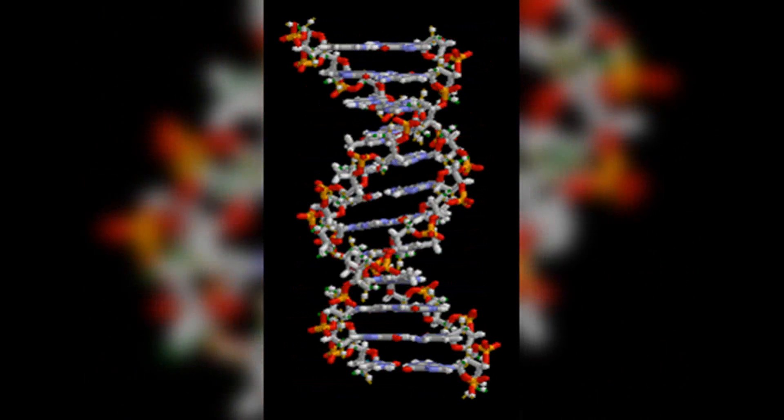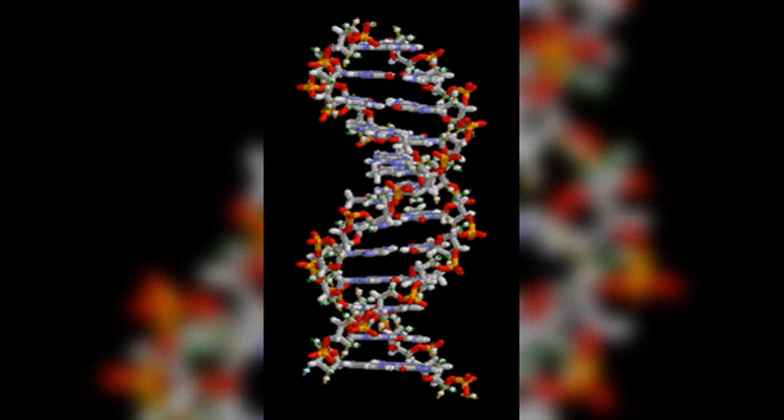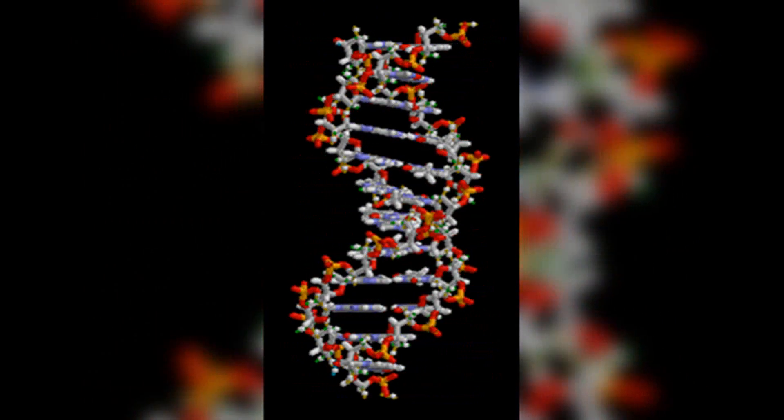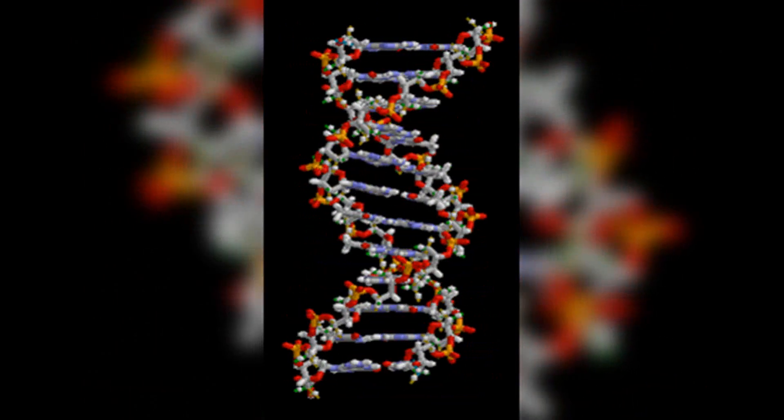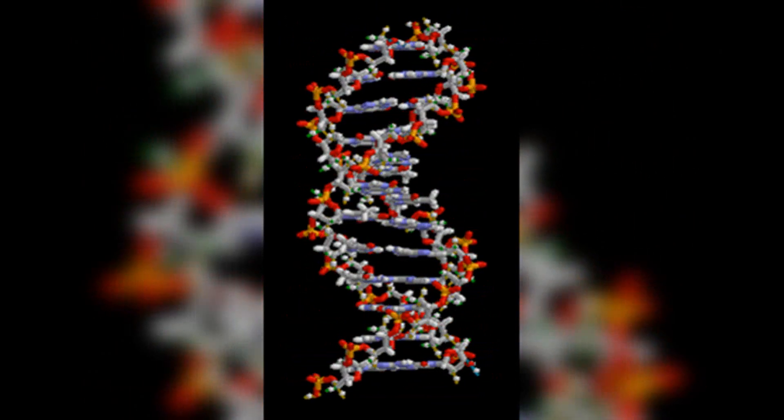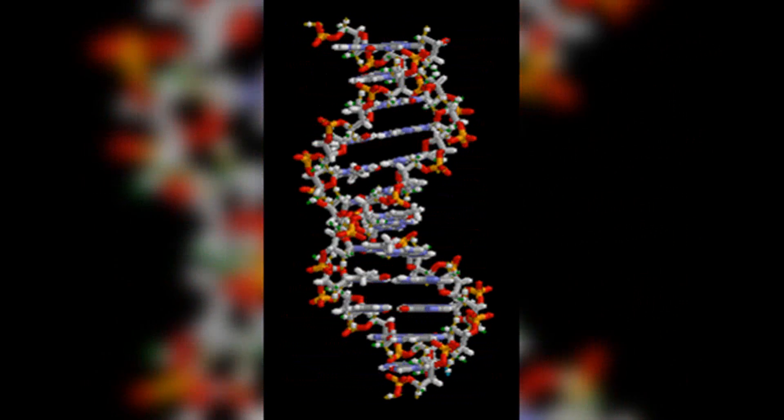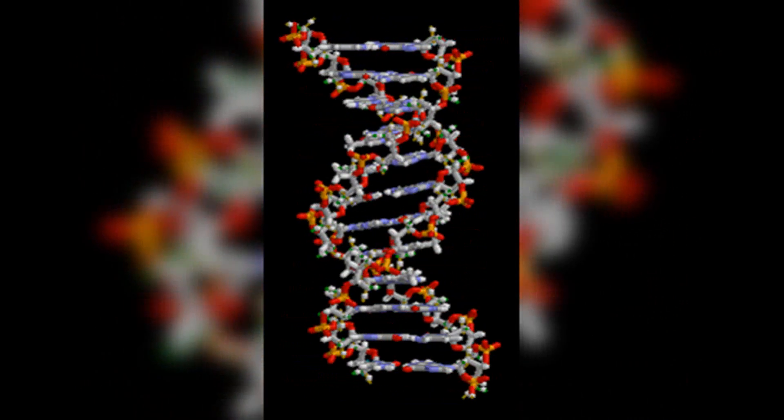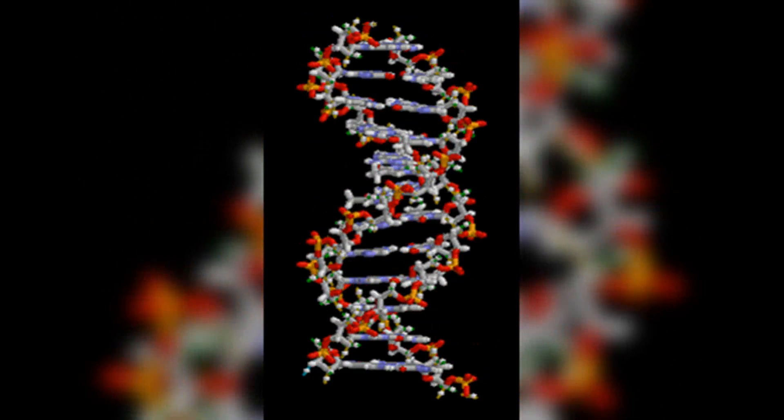The structure of DNA consists of two strands that are twisted together in a spiral shape, forming a double helix. Each strand is made up of a series of nucleotides, which are composed of three components: a sugar molecule, deoxyribose, a phosphate group,